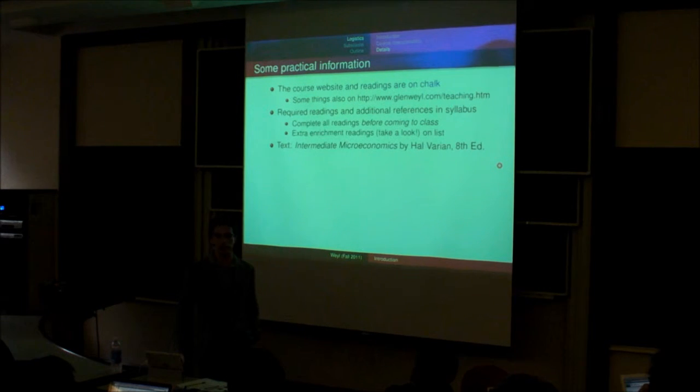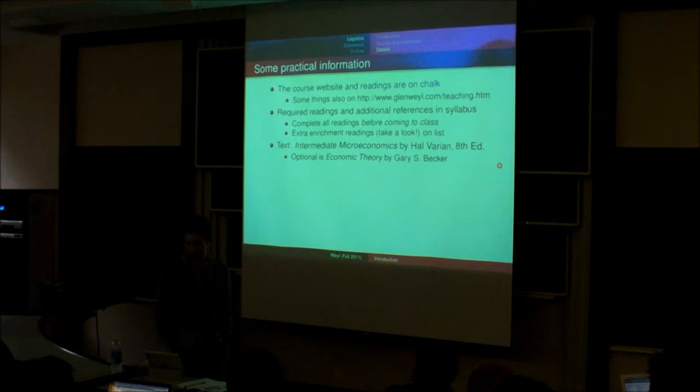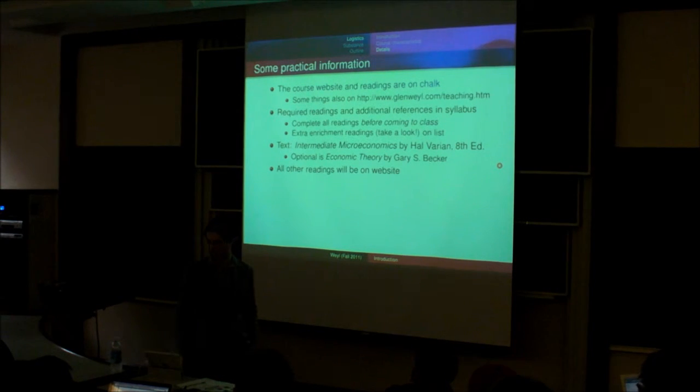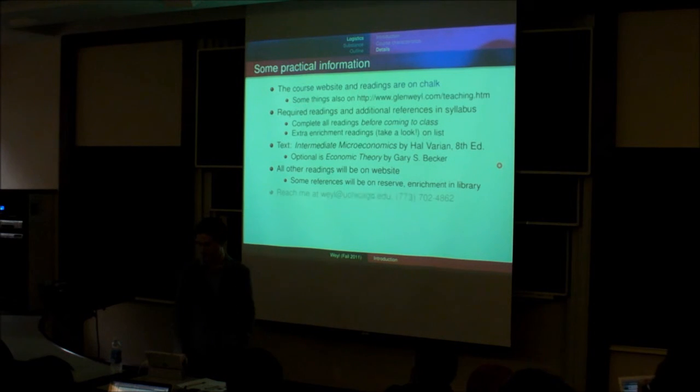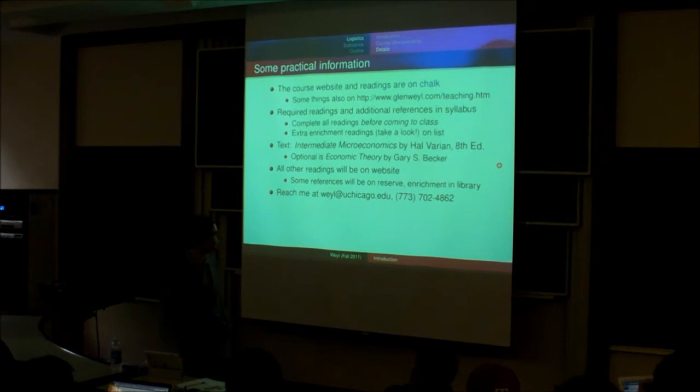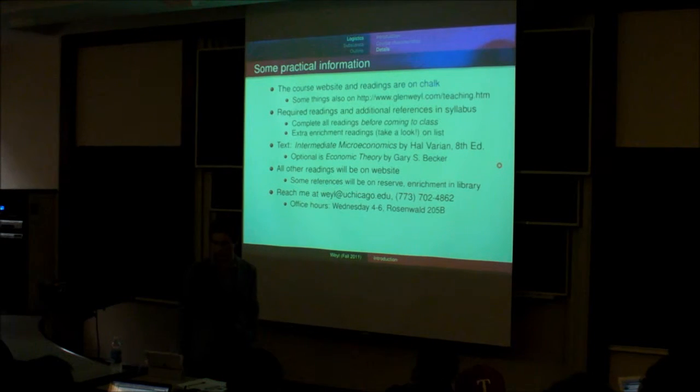There's also, for people who are interested in digging deeper in a variety of different ways related to the topic, there's a list of enrichment readings which go in many different directions. Some of them explore the mathematical basis of the things. Some explore the sort of the humanistic and philosophical side. Some of the current events implications, et cetera. So take a look at those if you're interested. The textbook for the class is Intermediate Microeconomics by Varian, 8th edition. And there's an optional text which we'll use in a few places, Economic Theory by Gary Becker. All other readings are on the website and you can just download them off of there. Some of the references, not the required readings, but the references are just going to be in reserve from the library rather than photocopied and put up on the website. You can reach me at weill@uchicago.edu and at this phone number. My office hours are Wednesday 4 to 6 at Rosenwald 205b, which is my office.